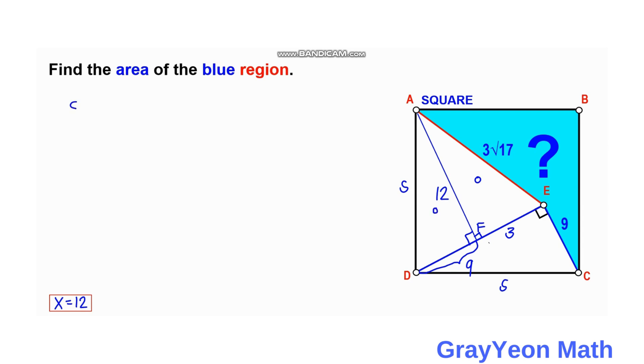So we have S squared is equal to, by Pythagorean theorem, 12 squared plus 9 squared. So S squared is equal to 144 plus 81. And if we add that, we have S squared is equal to 225 square units.